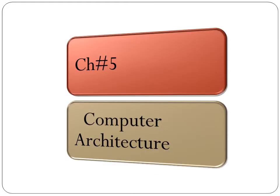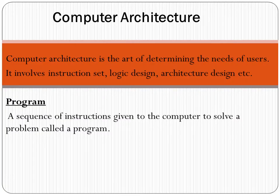We are going to start chapter number five which is named as Computer Architecture. First of all you need to know what is meant by architecture. Basically, architecture is an art of designing the structure of something. We can define computer architecture as it is the art of determining the needs of the users. It involves instruction set, logic design, architecture design, etc.